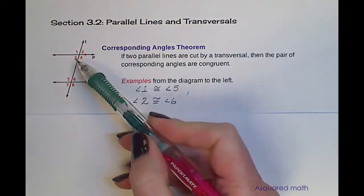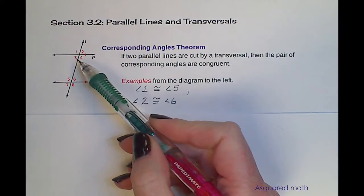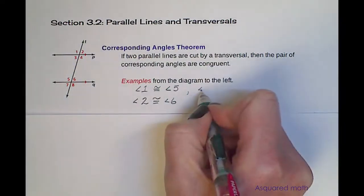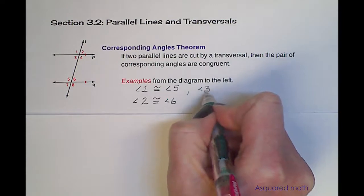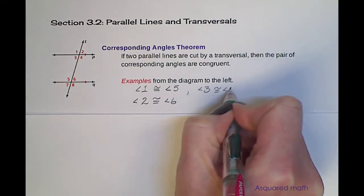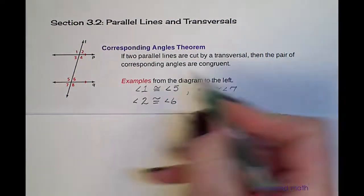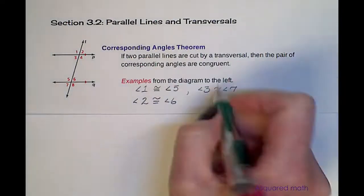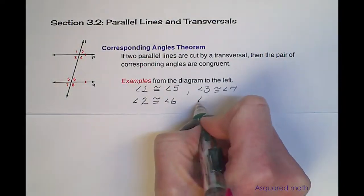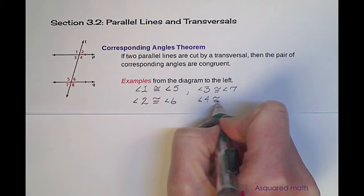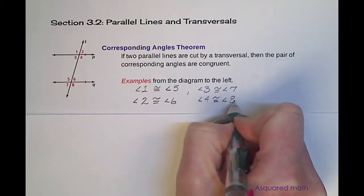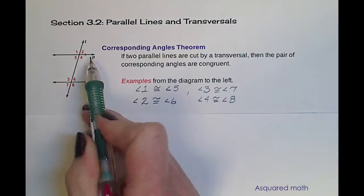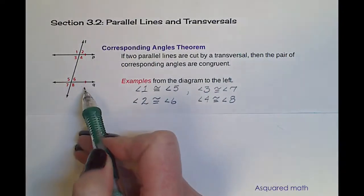Now if we look below the lines, angle 3 is congruent to angle 7. And finally angle 4 is congruent to angle 8, because angle 4 and angle 8 are both to the right of the transversal and below the parallel lines.